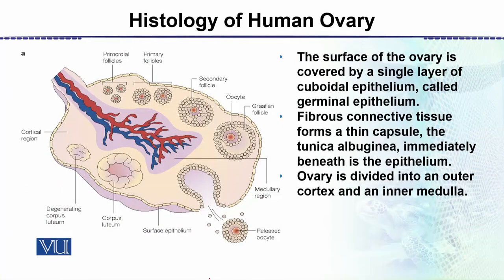This is a diagram showing the overall internal structure of the ovary. We can see the arteries and veins, and along with this there are nerves. The ovary is covered by a connective tissue layer called the tunica albuginea.